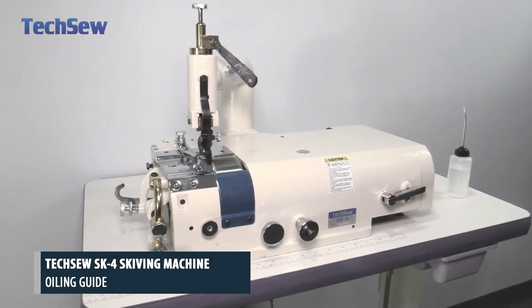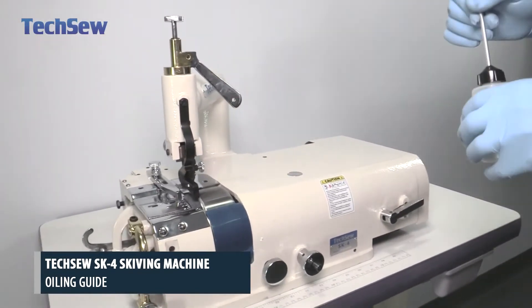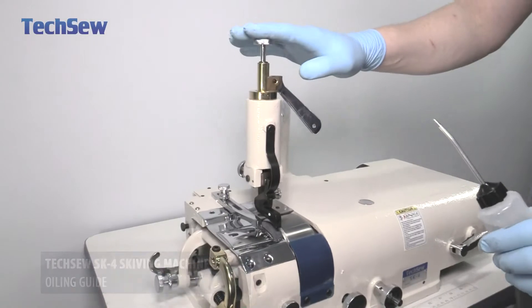These are the oiling points on your TechSew SK-4. This should be done every 8 hours of use. We will start from the top and work our way down.